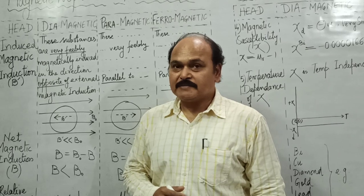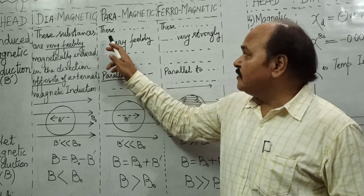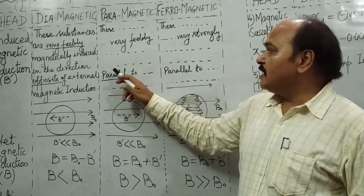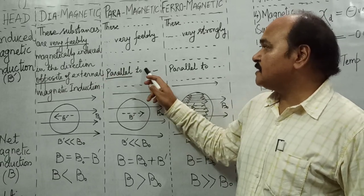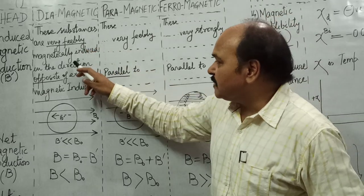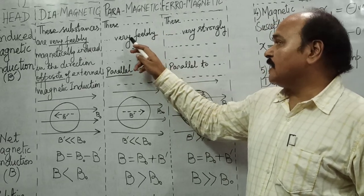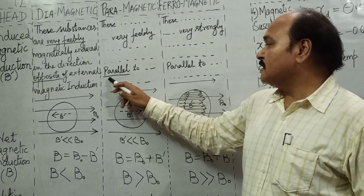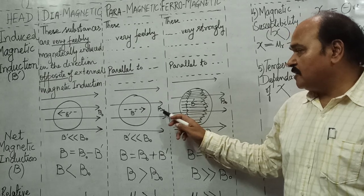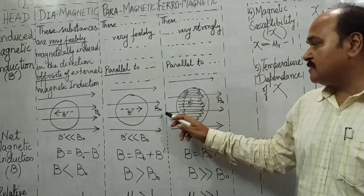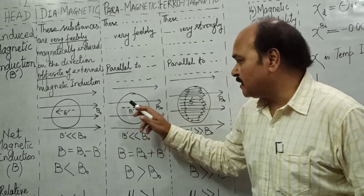Paramagnetic substances are very feebly magnetically induced in the direction parallel to the external magnetic field. The only difference between diamagnetic and paramagnetic is that here the induced magnetic field is weak and opposite, whereas for paramagnetic substances the induced field is very weak but parallel to the external field. So this substance placed in magnetic field B0 has its induced field B' in the same direction as the external field.